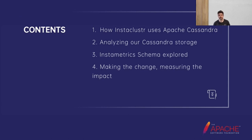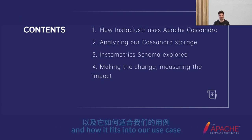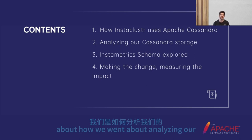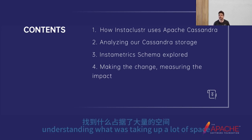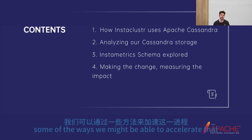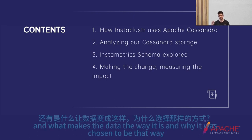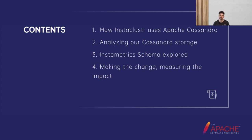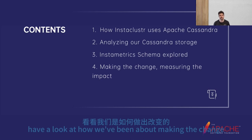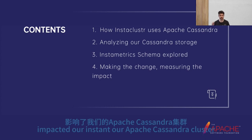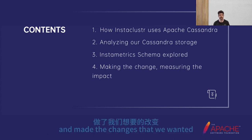So what are we going to talk about today? First of all, we're going to talk about how Instacluster uses Apache Cassandra and how it fits into our use case for our metric processing pipeline. We're going to talk about how we went about analyzing our Cassandra storage, understanding what was taking up a lot of space and figuring out some of the ways we might be able to alleviate that. We're going to dive deeper into the schema of our InstaMetrics Apache Cassandra cluster, and then we're going to look at how we went about making the change and dive into some graphs about what the resolution of these changes were and how they impacted our cluster.